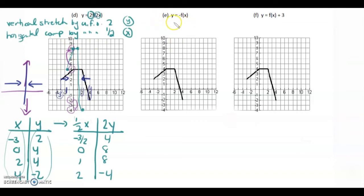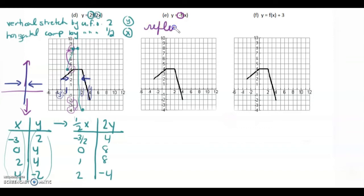E is a little bit of a throwback. This would be negative 1 times f(x). The 1 doesn't mean we stretch or compress, because multiplying by 1 is not a stretch — it's the same. So this is simply a reflection in the x-axis.